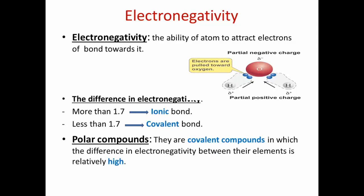The second property we are going to study is electronegativity. Electronegativity is the ability of an atom to attract the electrons of a bond towards it. As we can observe in the figure which represents a water molecule, that consists of one atom of oxygen combined with two hydrogen atoms. In this compound, oxygen shares two electrons while each hydrogen atom shares only one electron. We can observe that the two electrons of the bond are polarized, or more close to the oxygen atom, because the ability of oxygen to attract the electrons of the bond towards it is higher, so it has high electronegativity.